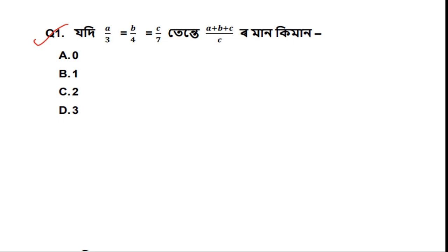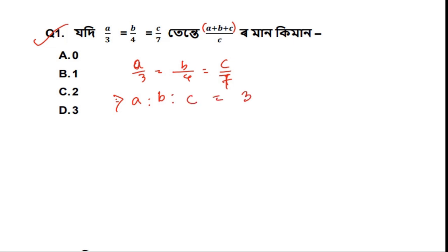A divided by 3 is equal to B divided by 4 is equal to C divided by 7. So A is equal to 3, B is equal to 4, and C is equal to 7. Then A plus B plus C divided by C is equal to 7. A is to B is to C equals 3 is to 4 is to 7.